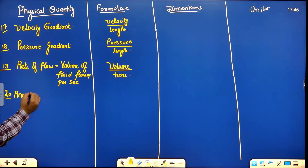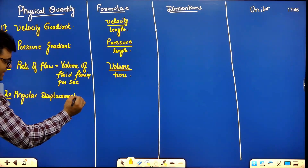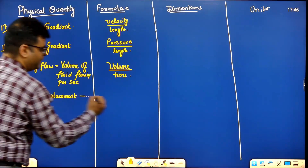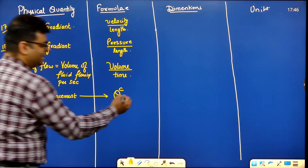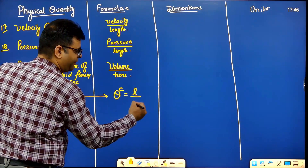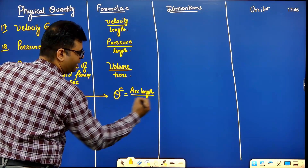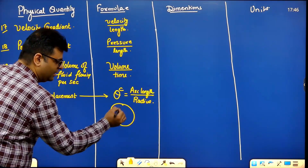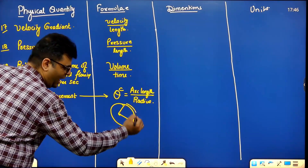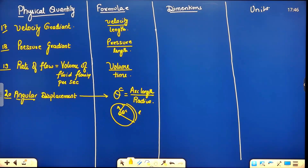Angular displacement (number 20) is not the same as linear displacement — the name is different. Angular displacement is an angle (theta) in radians, which equals arc length upon radius (L/R). Those who have studied maths: there is a circle, two points, a center; the arc length upon radius gives the angle in radians, called angular displacement in physics.